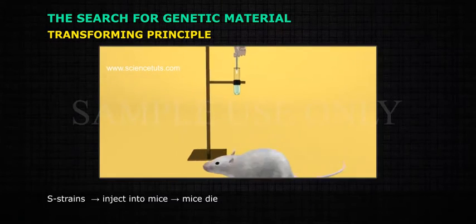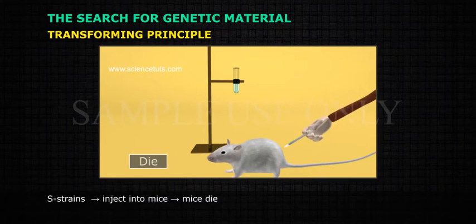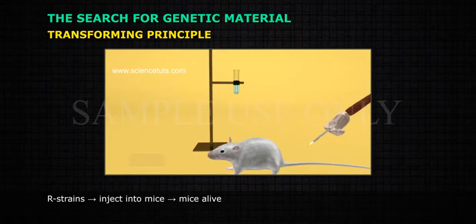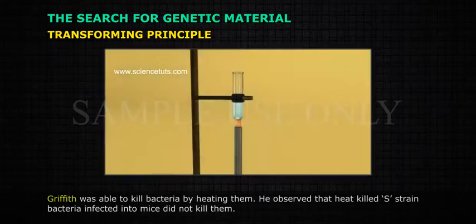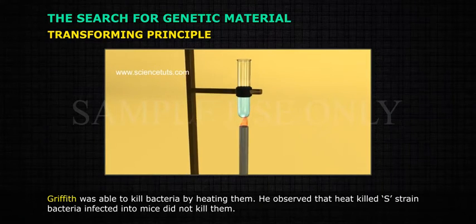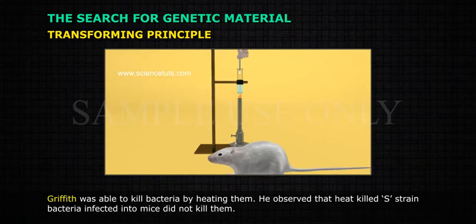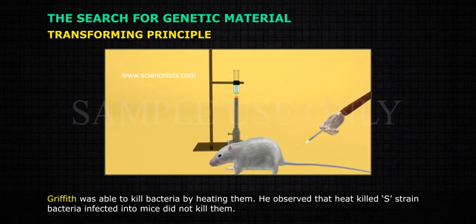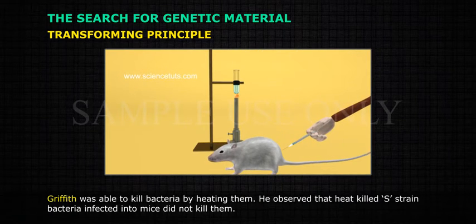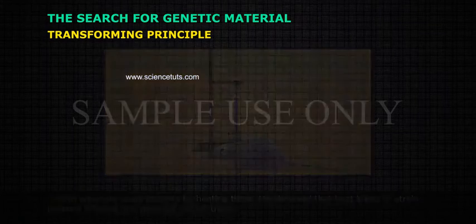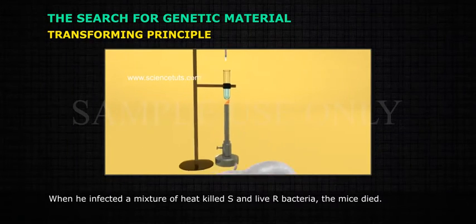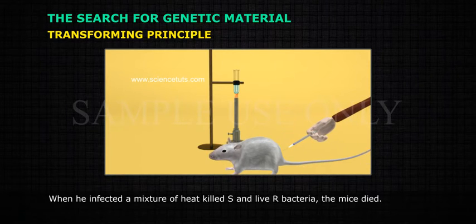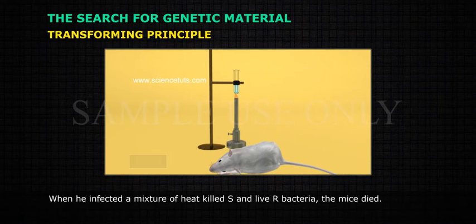When the S strain is injected into mice, the mice die. When the R strain is injected into mice, the mice survive. Griffith was able to kill bacteria by heating them. He observed that heat-killed S strain bacteria injected into mice did not kill them. But when he injected a mixture of heat-killed S and live R bacteria, the mice died.